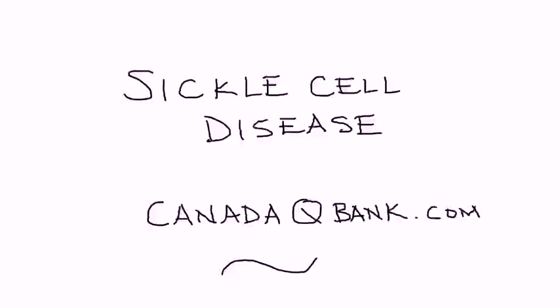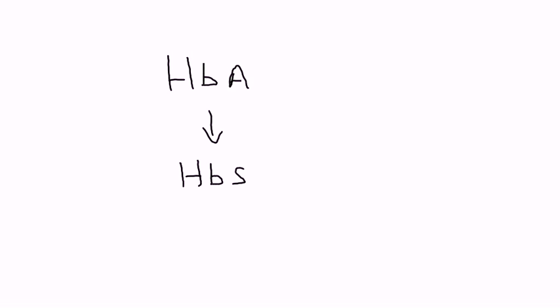In this video, I'm going to talk about sickle cell disease. Sickle cell disease is basically when the hemoglobin molecules, the normal ones, are replaced by mutant forms. In a normal person, you will have hemoglobin A, which is the normal form of hemoglobin. In sickle cell, you have a form called hemoglobin S, and you really need to have two copies of this hemoglobin S for this disease to manifest itself.